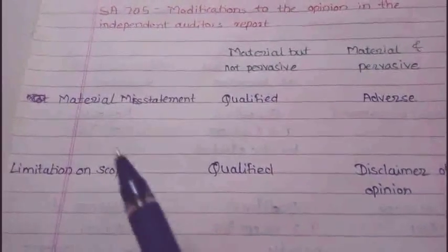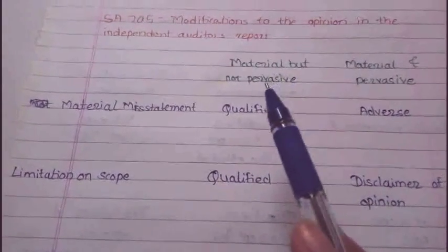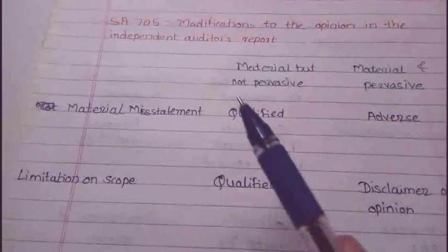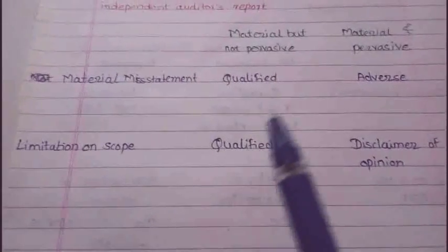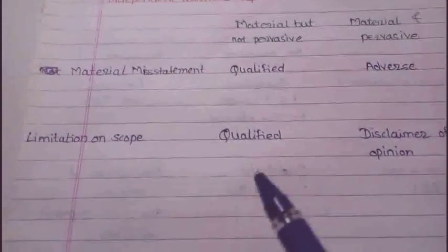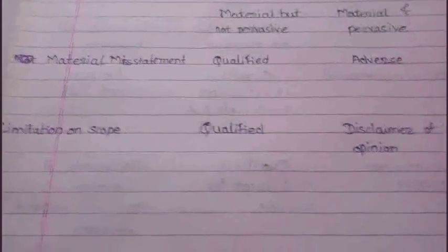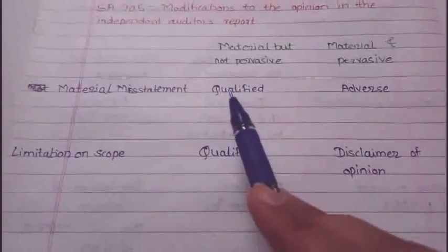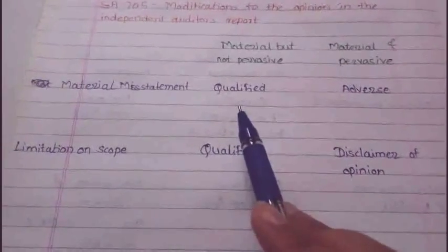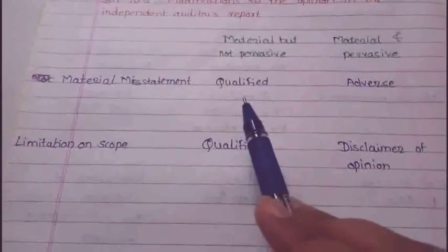To summarize: if there is a material misstatement and it is material but not pervasive, then qualified opinion; if it is pervasive, then adverse opinion. If there is a limitation on scope and it is not pervasive, then qualified opinion; if it is pervasive, then disclaimer of opinion. In SA 700, the unmodified opinion used the phrase 'true and fair view.' These are all modified opinions.